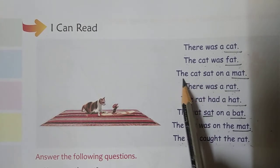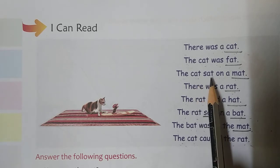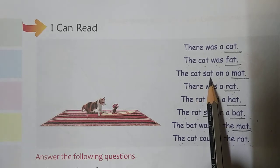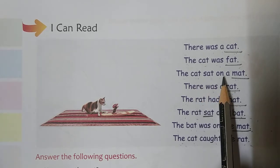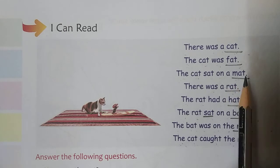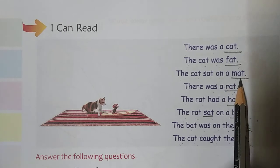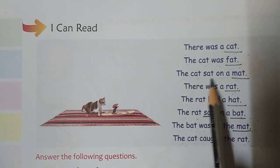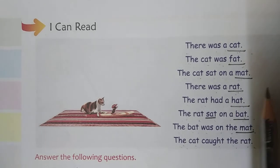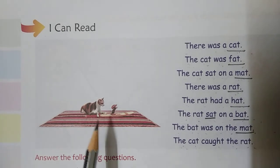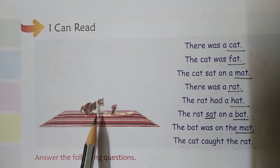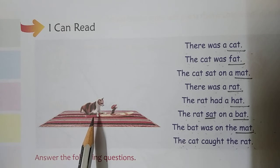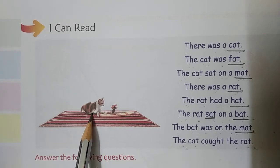T-H-E, the, C-A-T, cat. S-A-T, sat, O-N, on, A, M-A-T, mat. The cat sat on a mat. Where was the fat cat? The fat cat was on the mat.